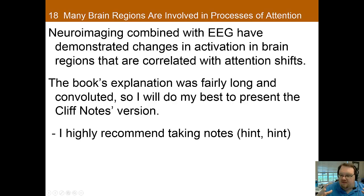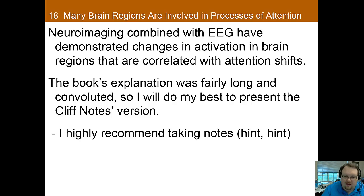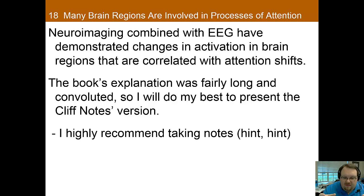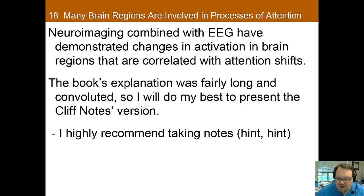Neuroimaging combined with EEG has demonstrated changes in activation in different brain regions correlated with attentional shifts. We know that different brain regions appear to be associated with shifting attention. However, finding the neurological basis of attention is extremely challenging because attention is a very diffuse process — you see activity in many different areas of the brain. Through neuroimaging we've been able to enhance temporal resolution, and a few brain regions have been particularly implicated in attention, primarily identified through looking at changes in brain activity when attention changes. There's still a lot we don't know, but here's what we do know based on the latest imaging and EEG results.